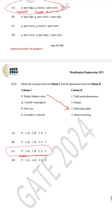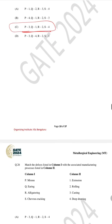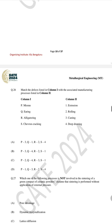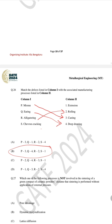For question number 26 the correct answer is B. Misrun is a casting defect, earing is a deep drawing defect, alligatoring is a rolling defect, and chevron cracking is an extrusion defect.